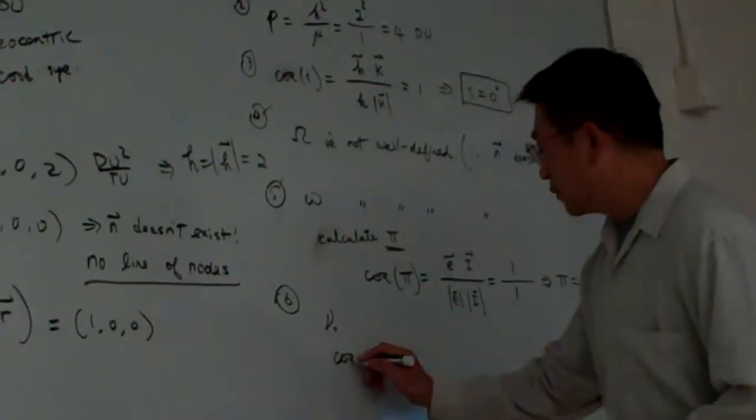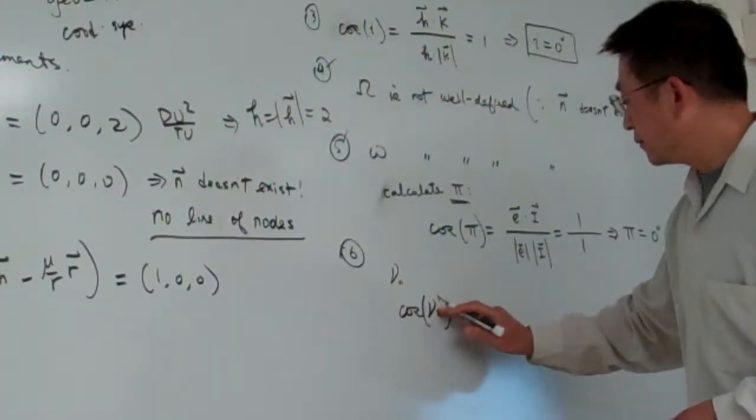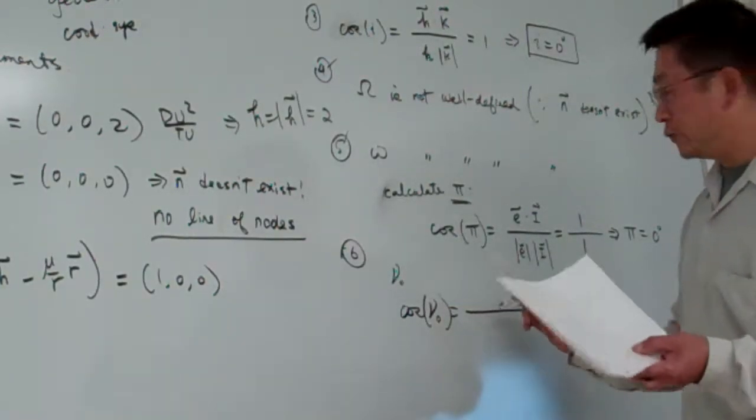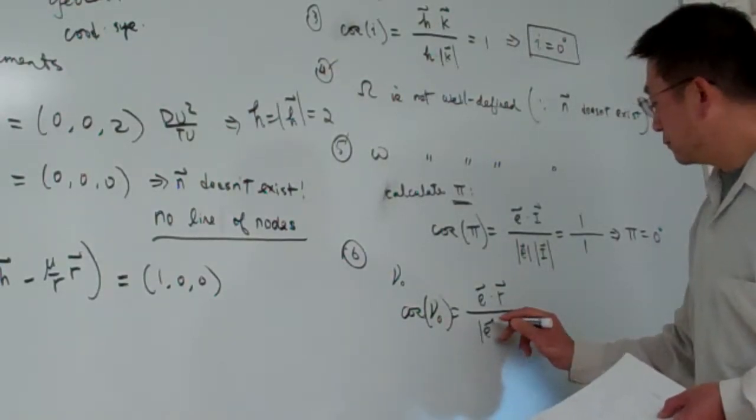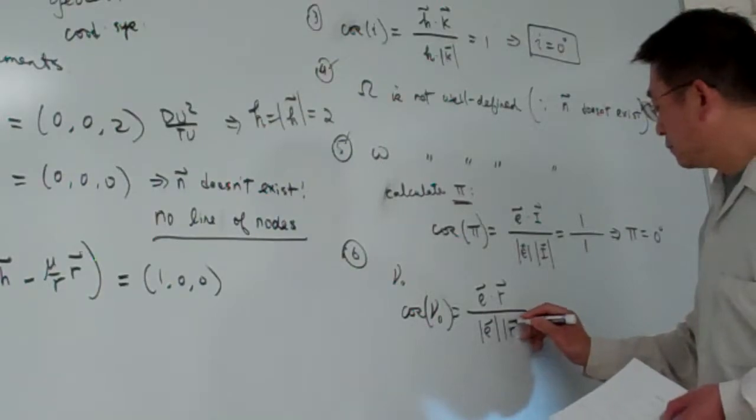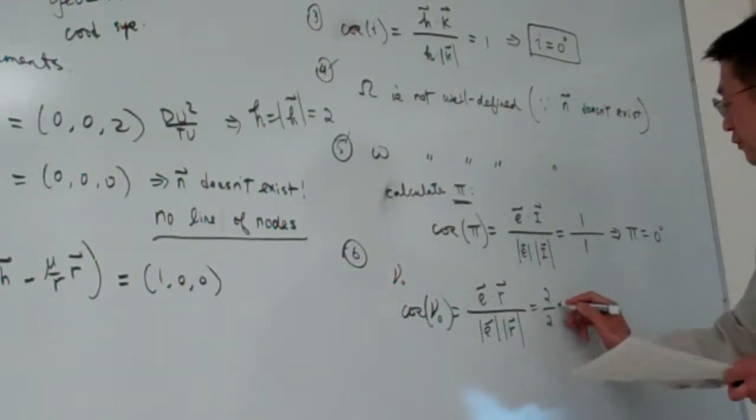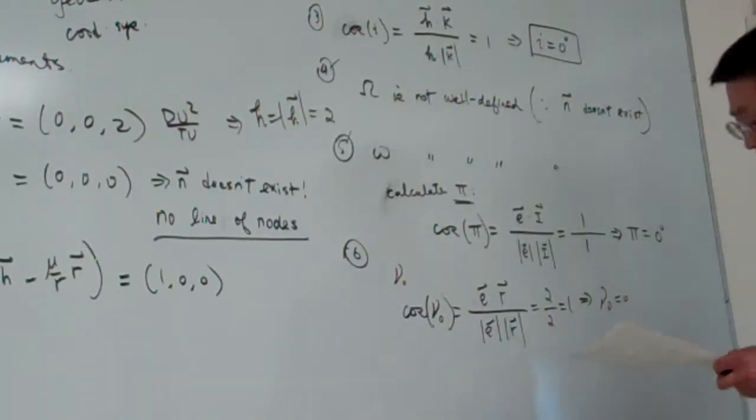So here, we determine cosine nu zero equal to two vectors e dot r. Okay. So this one equal to two divided by two equal to one. So again, the nu equal to zero degrees.